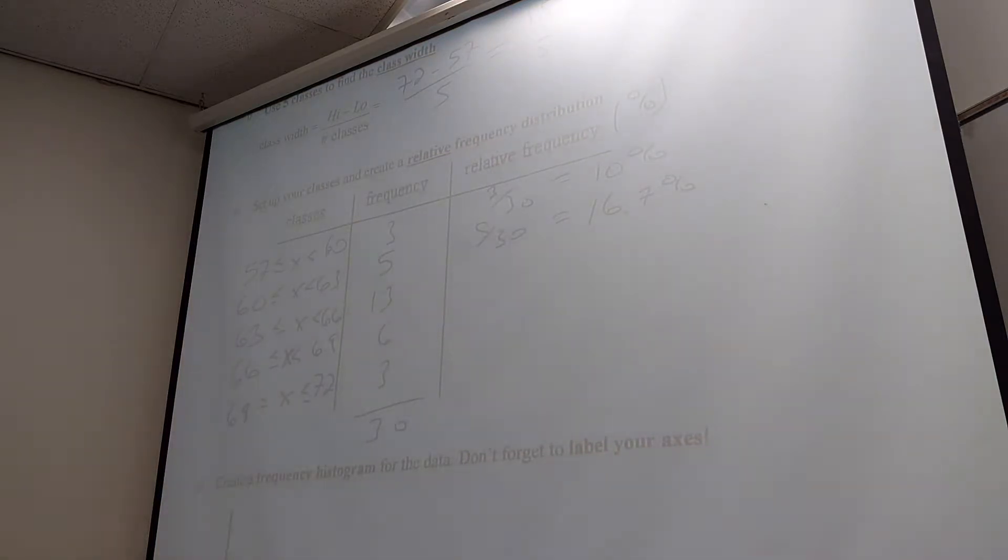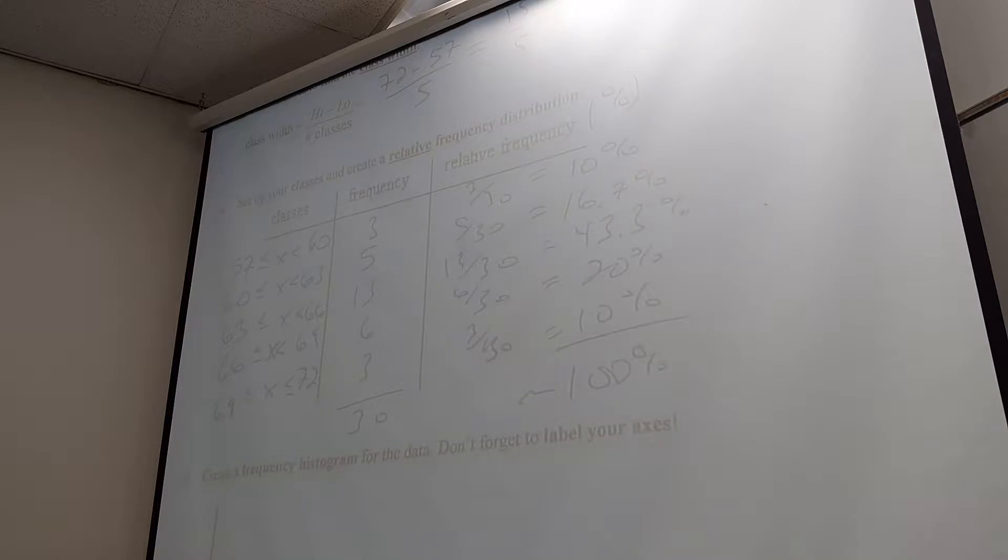Relative frequency, another name for percentage. So how many data points total are there? 30. 30. So out of 30, how many showed up in this class? 3. 3, which is? 10%. 10%. Crazy. 5 out of 30? 16.7%. Good. 16.7%. That's fine. Or 17. We're going to do this by hand, so I don't think you can get the difference between 16.7 and 17, that's fine.